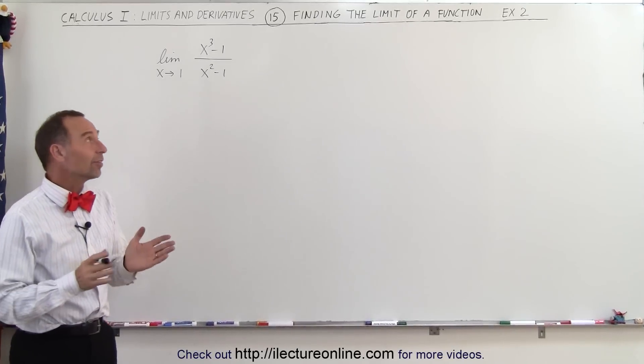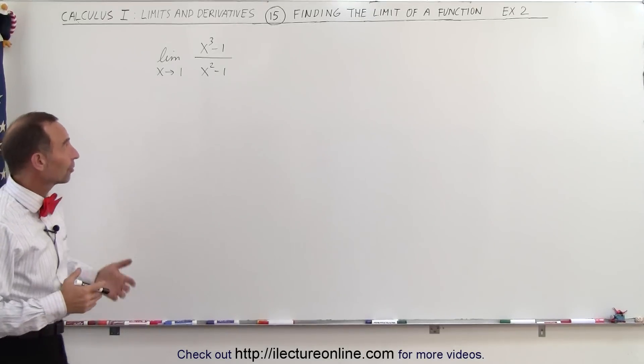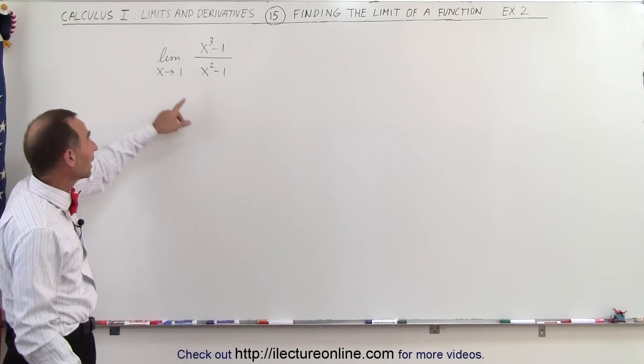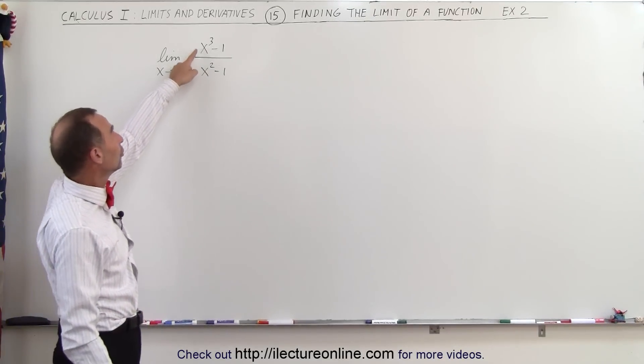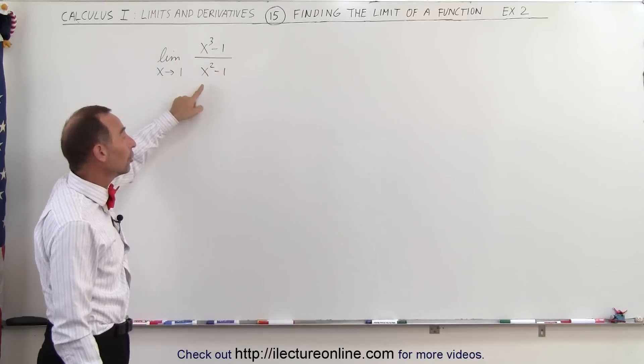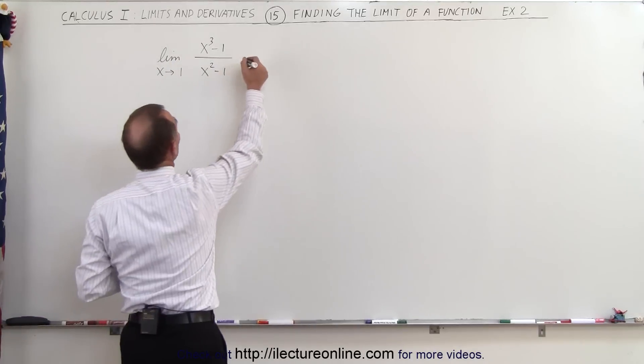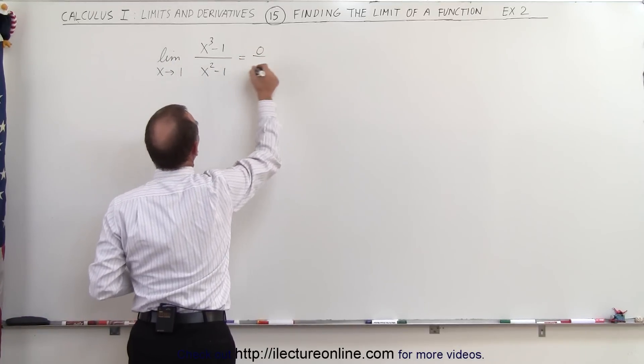Welcome to our lecture online. Here in this example, again by first inspection, you can see that when you plug in x equals 1 to the numerator and the denominator, you would end up with 1 minus 1 is 0 divided by 1 minus 1 is 0.